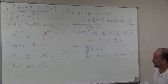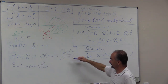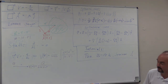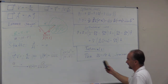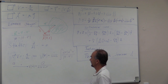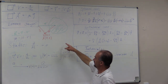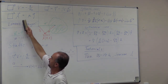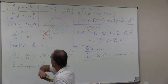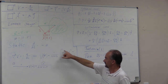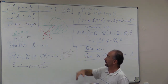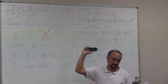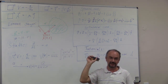We can write this using the script R notation as R over |R minus R prime|. This is the potential for a static situation, and you can do the same for the vector potential — just replace the charge density by the current density J.